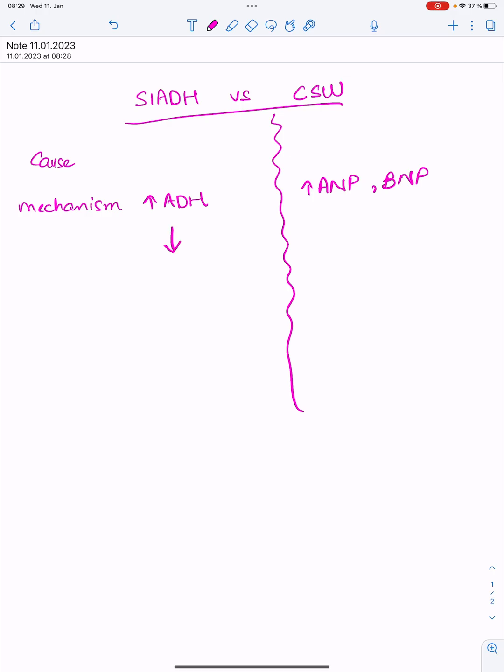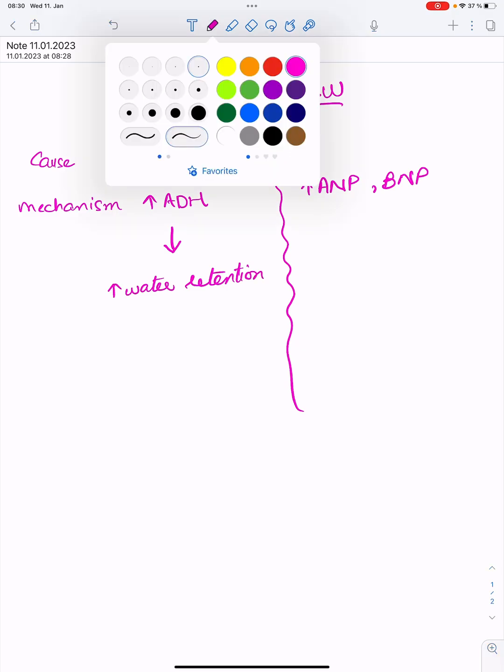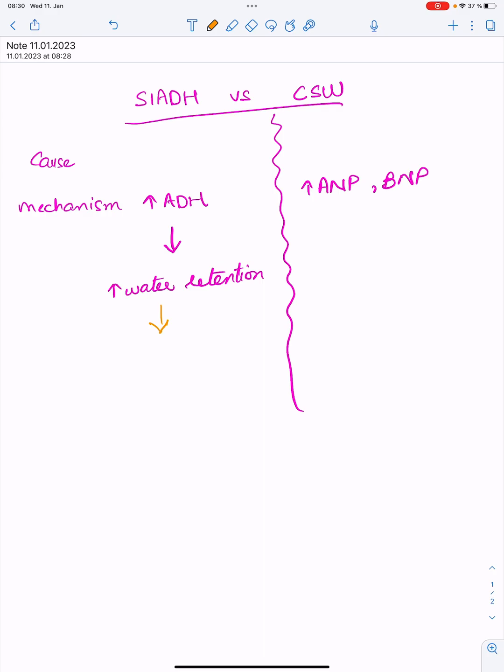What ADH causes is that ADH leads to increase in water retention. This increase in water retention leads to... like this was previously this water and this is now retained, and this is our sodium, and this is our sodium now. So now the water is increased because of increase in ADH. There is dilutional hyponatremia. These are the sodium molecules, so because the fluid is more, solute is less, and we have dilutional hyponatremia.